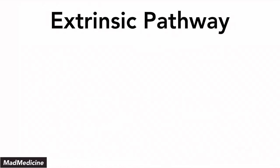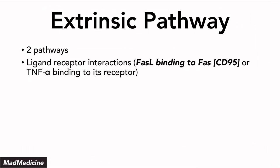With that being said, let's dive in and talk about the extrinsic pathway. There are two main mechanisms by which the extrinsic pathway can cause apoptosis. The first is ligand-receptor interactions — FAS ligand binding to CD95 or FAS, and TNF-alpha binding to its receptor. So the two main ligands are FAS ligand and TNF, tumor necrosis factor alpha.